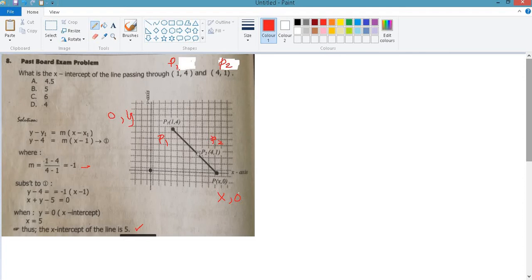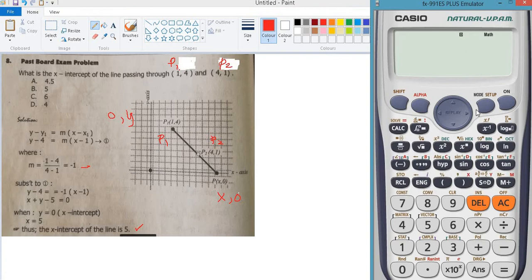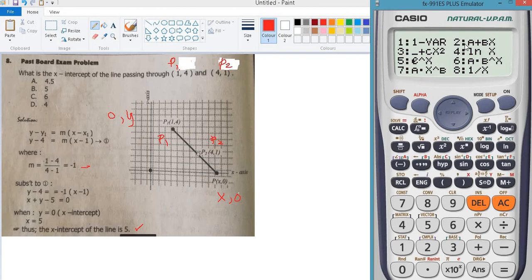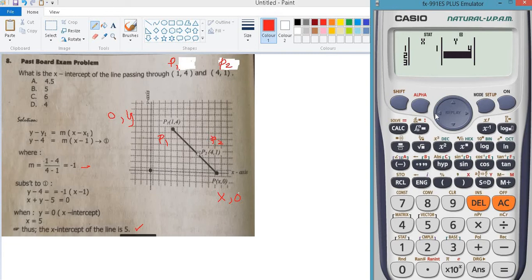Let's go to the calculator, mode 3. We will use number 2. B is the slope and A is the y-intercept. Remember that, press 2, then input the coordinates. 1 is 4, so 1,4. And 2 will be 4,1.